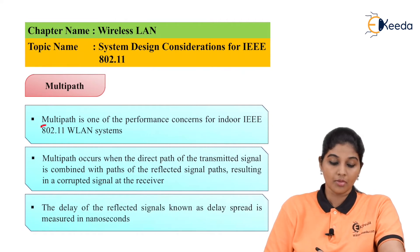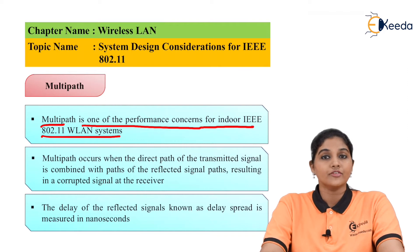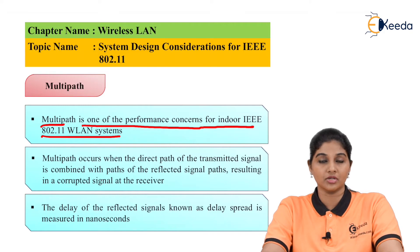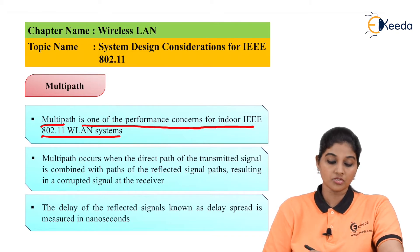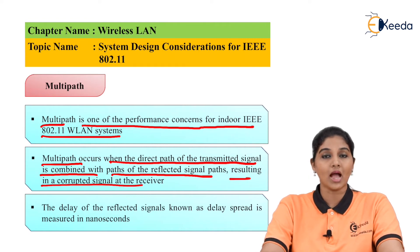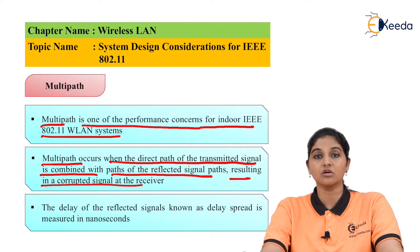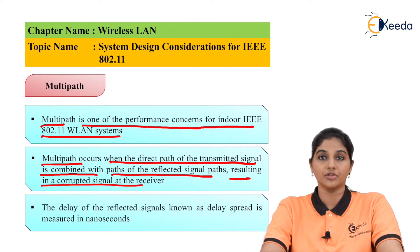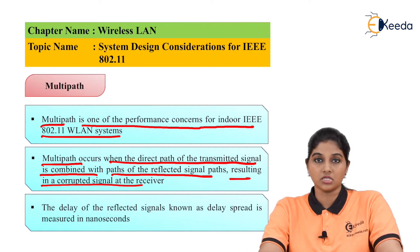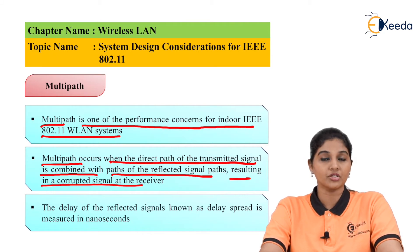The second parameter is multipath, which is one of the key performance concerns for IEEE 802.11 wireless LAN systems. Wireless LAN systems implemented inside homes, offices, or buildings are considered indoor wireless LAN, and multipath is a prime concern in such environments. Multipath occurs when the direct path of the transmitted signal is combined with the reflected signal path, resulting in a corrupted signal at the receiver.